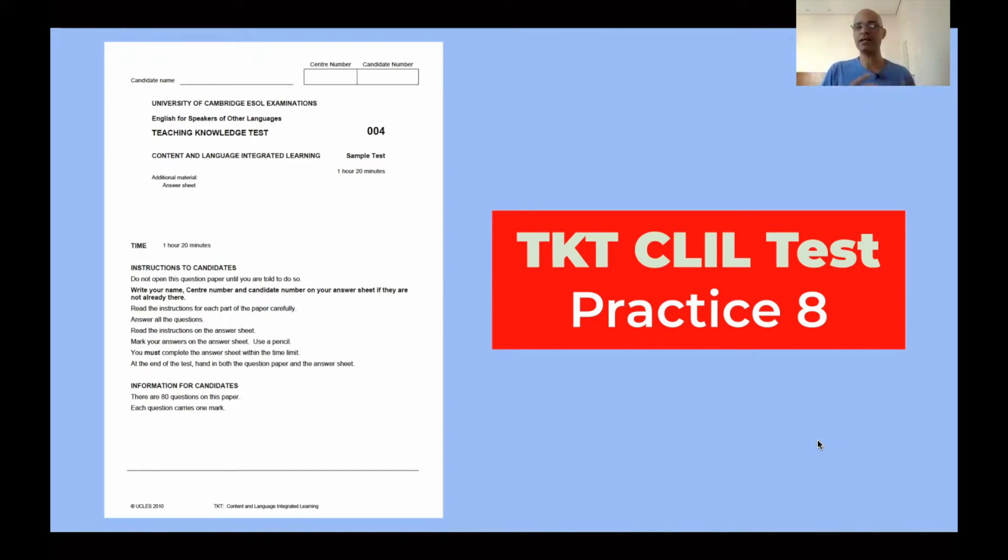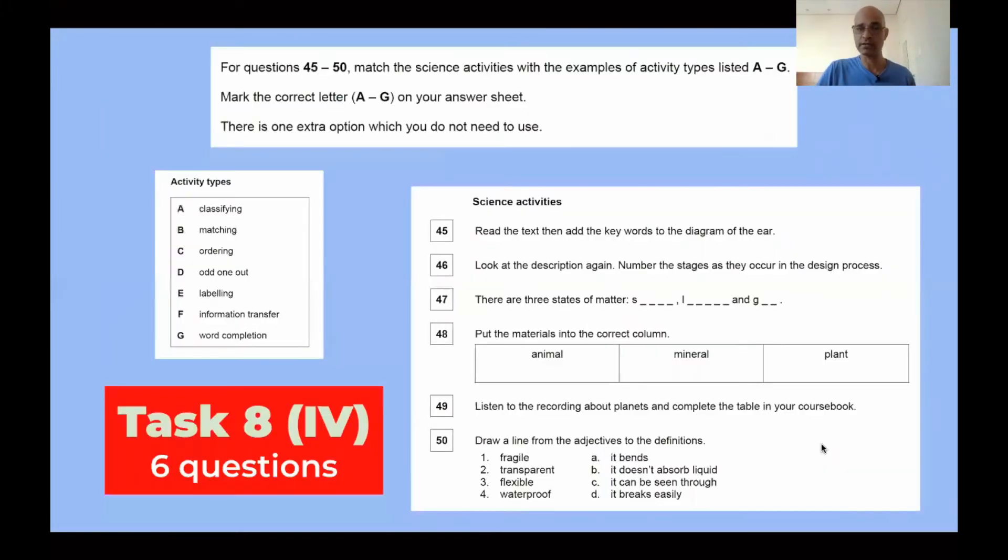Why do we call this practice eight? Because the test is actually divided into chunks. And task eight is the fourth chunk of the second section of the task. So that's basically the way it is. So you have three parts. Part one has four tasks. Part two has four tasks. So task eight is the last task of the second part, the second section. You don't need to understand this. It's just for organizational purposes.